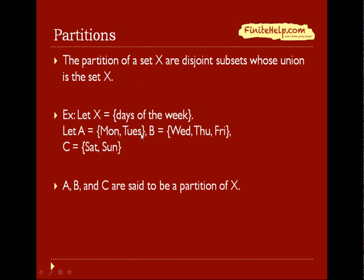So first thing, notice these sets are disjoint because there are no common elements between them. And notice the second thing is that when you put A, B, and C together, the union of them, you can see that that includes Monday, Tuesday, Wednesday, Thursday, Friday, Saturday, and Sunday, which put together to be the days of the week. So therefore, A, B, and C are said to be a partition of X.